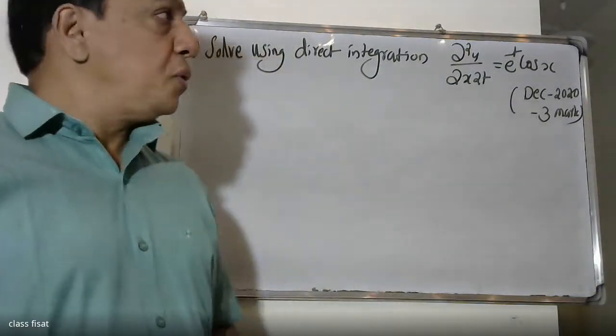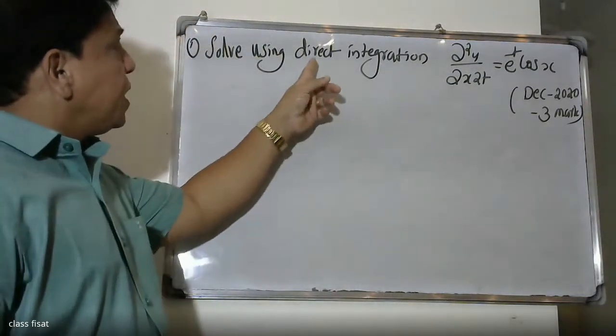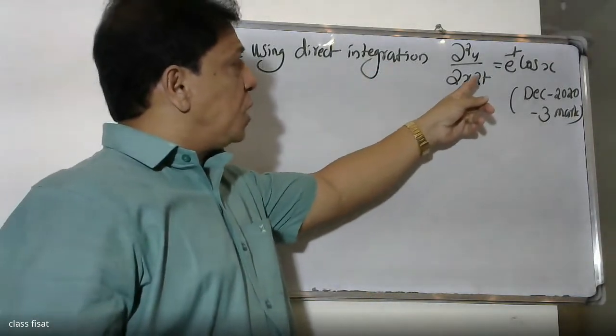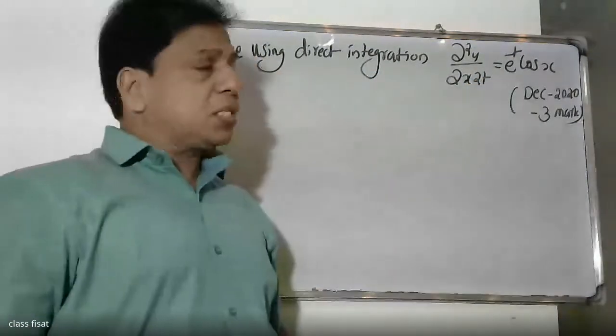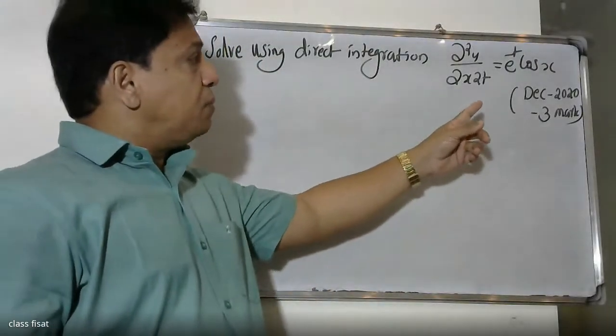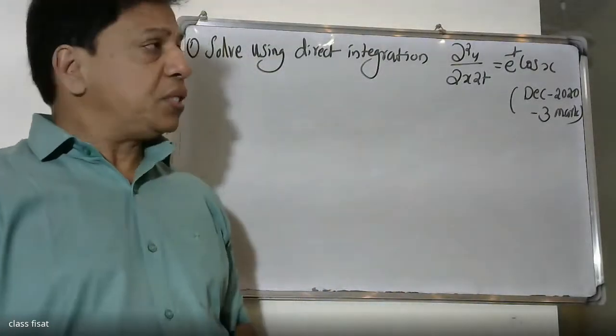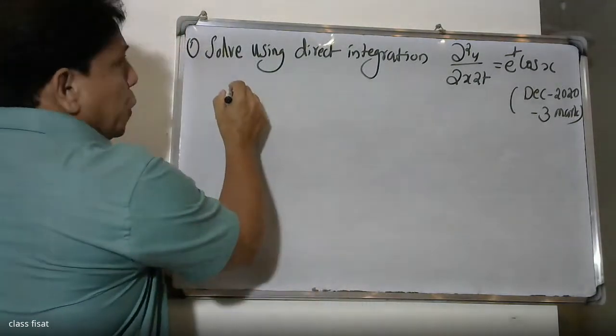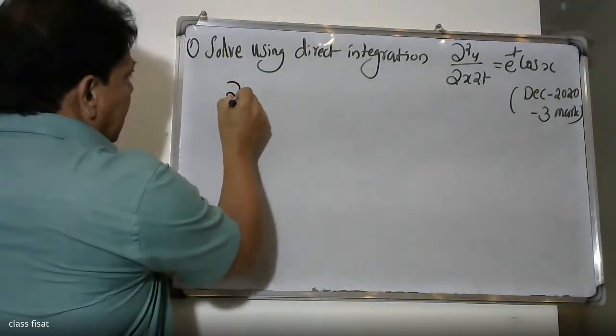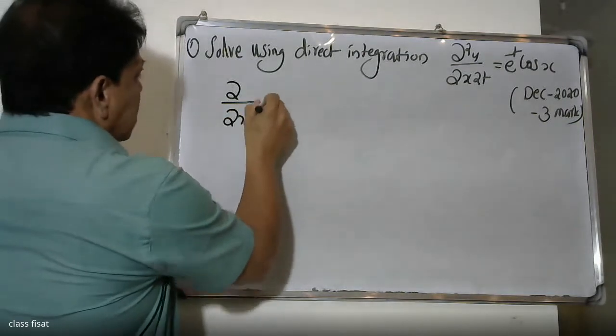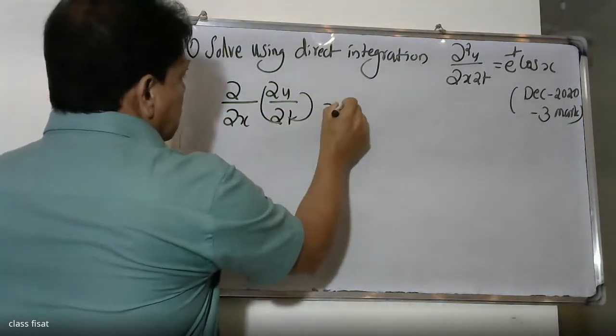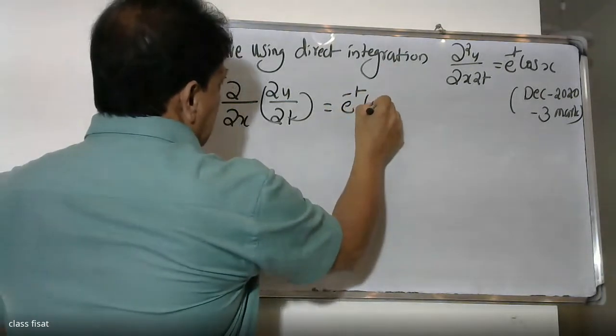Good morning students. We're solving using direct integration: ∂²u/∂x∂t = e^(-t)cos(x). This is from the December exam. We have the problem where ∂/∂x(∂u/∂t) equals e^(-t)cos(x).